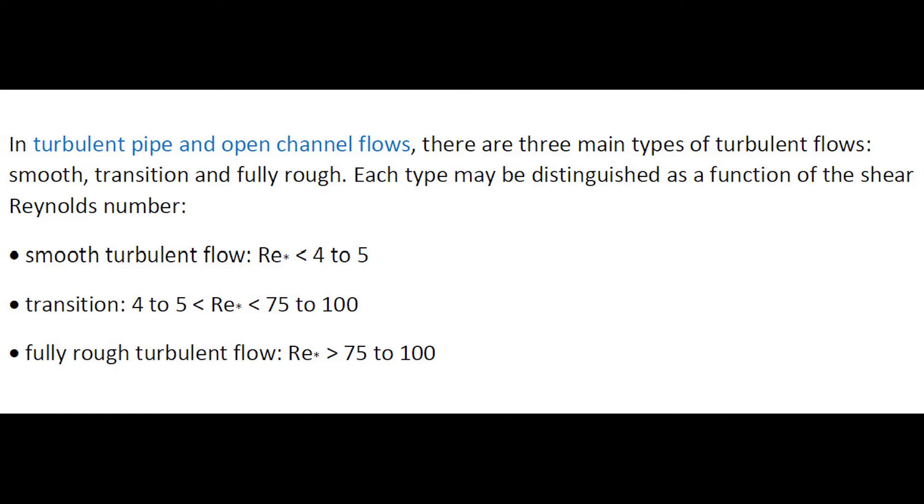In turbulent pipe and open channel flow, there are three main types of turbulent flow: smooth turbulent flow for a shear Reynolds number less than 4 to 5;